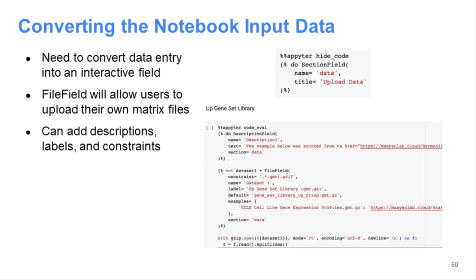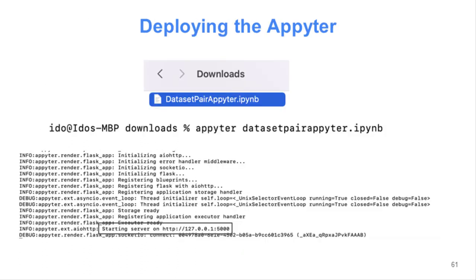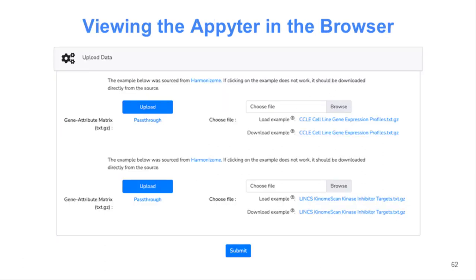The first thing to do is create those new cells. One new cell is the Appyter hide code cell. There is another cell that replaces the fetching of the file from Harmonizome — specifically the CCLE file — with a button to locate, upload, and unzip the file. Then on the command line, type 'appyter' followed by the name of the file, noting that the filename may include today's date. What you should see in the browser is a web form with two upload input forms.